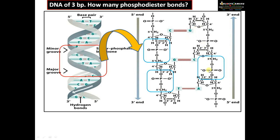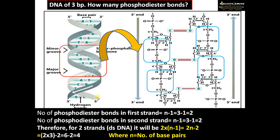In the second strand, which runs in the 5 prime to 3 prime direction antiparallel to the first, there are also two phosphodiester bonds. Therefore, the number of phosphodiester bonds in the first strand is n minus 1, where n is the number of base pairs. Here n is 3, so 3 minus 1 equals 2. The second strand also has n minus 1, which is 2. For the double-stranded DNA molecule, the total is 2 into (n minus 1), which gives 2n minus 2.